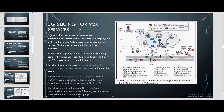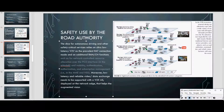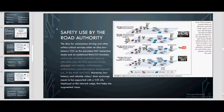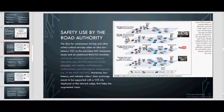The unique features of V2X services do not allow straightforward mapping into a single V2X slice. Therefore, based on the main KPIs and functional requirements, we propose a set of four slices. The safety slice used by the Road Authority relies on ultra-low latency V2V as the prevalent RAT connection mode, and on additional RAN/CN functions such as network-controlled resource allocation over the PC5 interface in the eNodeB, and mobility, authentication, authorization, and subscription management in the MME and HSS. Moreover, low-latency and reliable video/data exchange needs to be supported with the V2XAS deployed at the network edge to help with augmented vision.